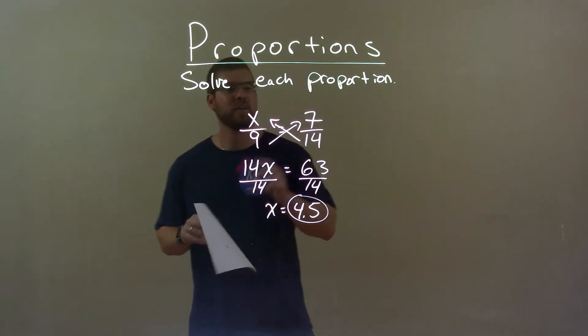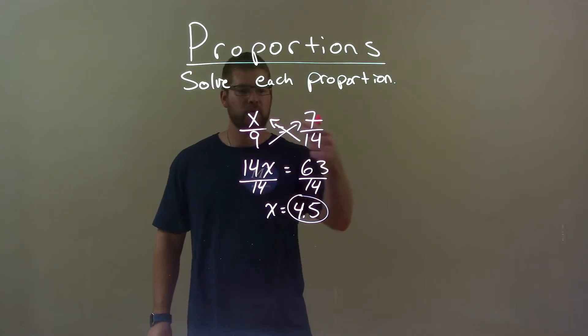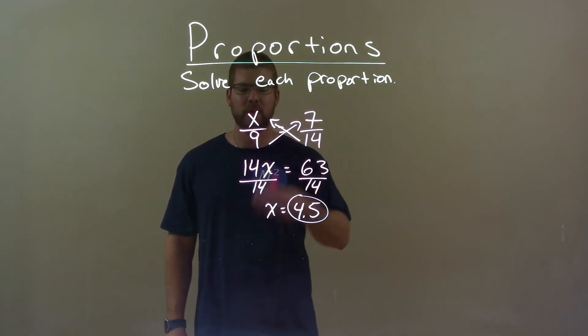So, quick recap. We're given x over 9 equals 7 over 14, and we just solved that proportion. Cross-multiply. 14x equals 63. Divide both sides by 14. X is by itself and it's equal to 4.5.